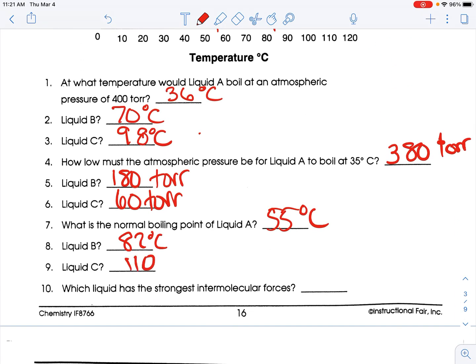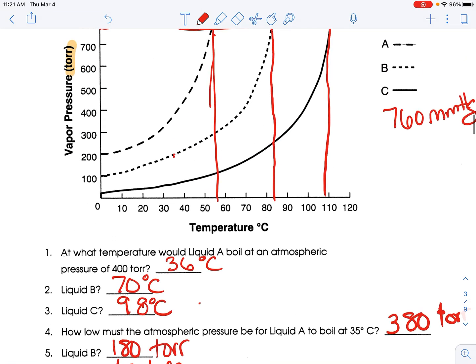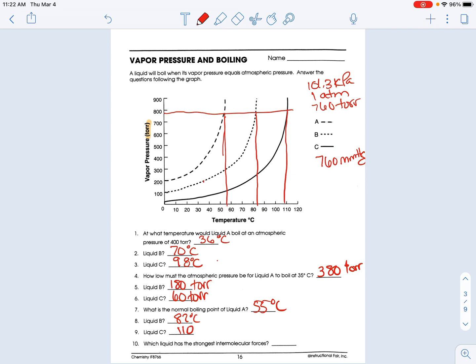Which liquid has the strongest intermolecular forces? Okay, so let's zoom back out. So the strongest intermolecular forces, strongest force, is going to take the highest temperature to boil. Because the particles are being held so closely together with the strong force, you're going to have to apply a lot of heat. You're going to have to have a really high temperature for it to boil. So who has the highest boiling point normally? That's going to be liquid C. So it must have the strongest intermolecular forces.